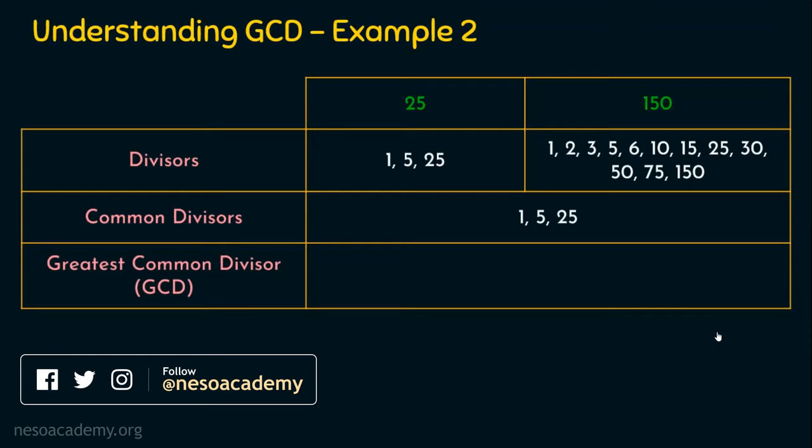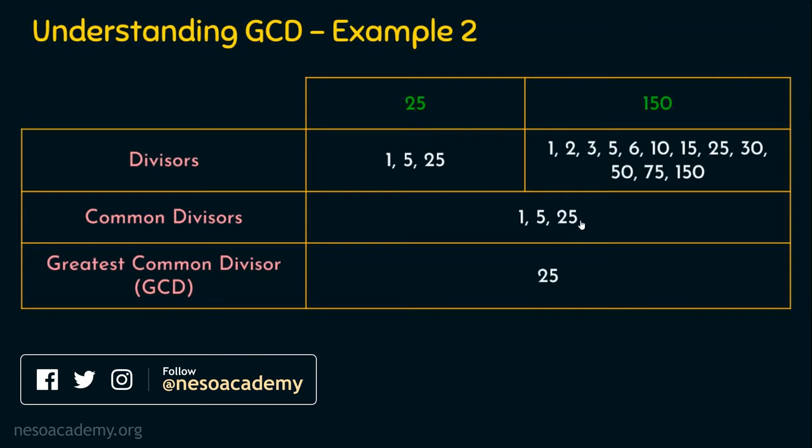The common divisors are 1, 5 and 25. Which is the greatest common divisor among these three? Obviously, 25. So the GCD of 25 and 150 is 25. I hope things are clear.